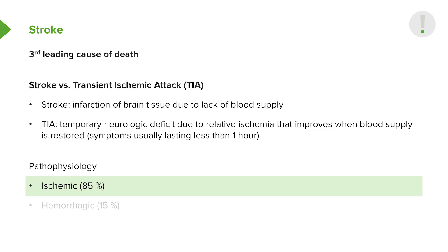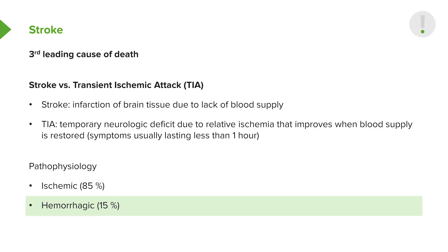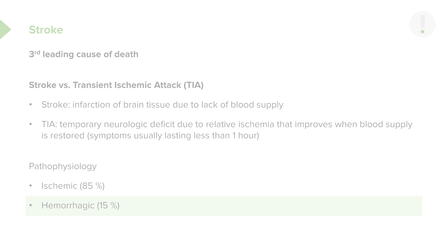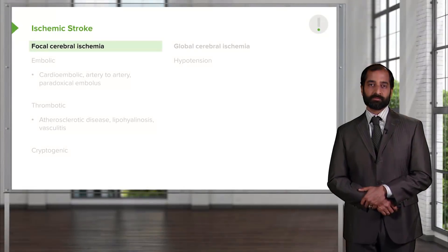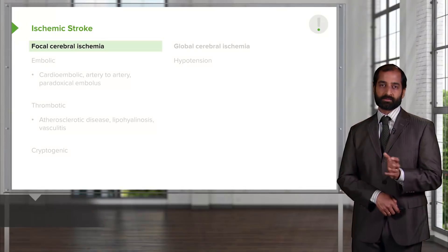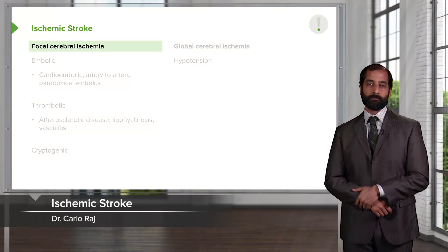Now for the pathophysiology: 85% of strokes that occur are of ischemic nature, whereas 15% could be hemorrhagic. Therefore, our time should be focused upon ischemic, and then to be complete I'll give you a proper definition of a hemorrhagic stroke. With ischemic stroke, we'll divide it into focal versus global.